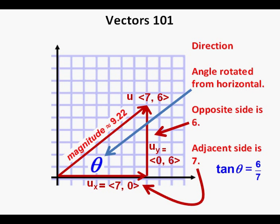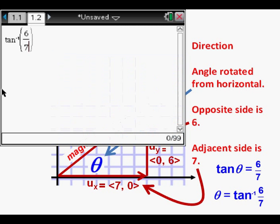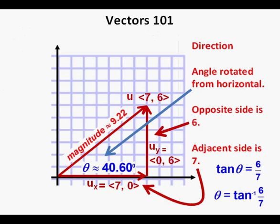Therefore, the tangent of the angle is the fraction 6 sevenths. Therefore, angle theta equals the inverse tangent, or arctangent, of 6 sevenths. We can enter this expression into our calculator as shown. When we press enter, we get 40.60 degrees, rounded to the nearest hundredth place. And here the measure of angle theta is labeled.